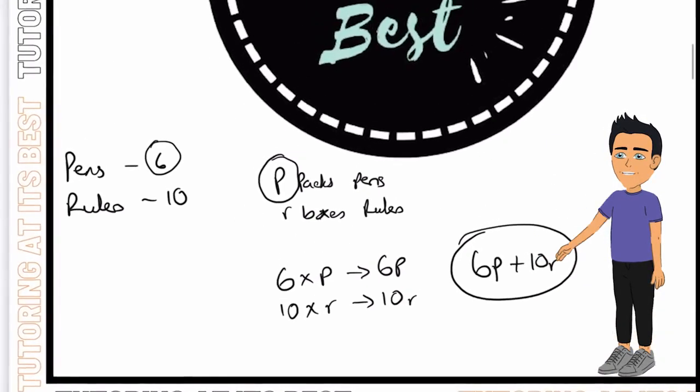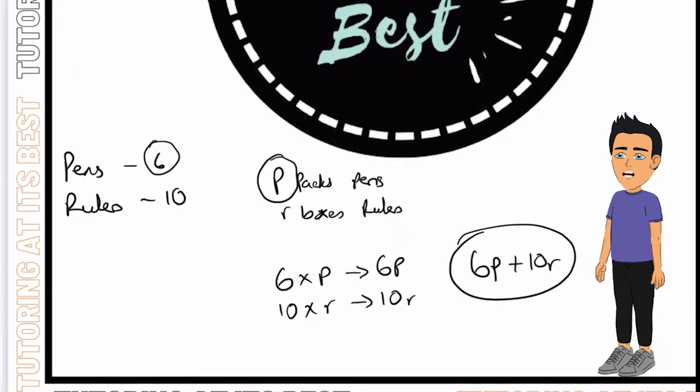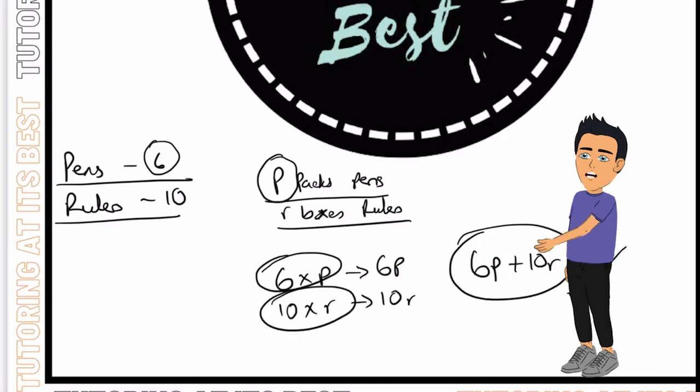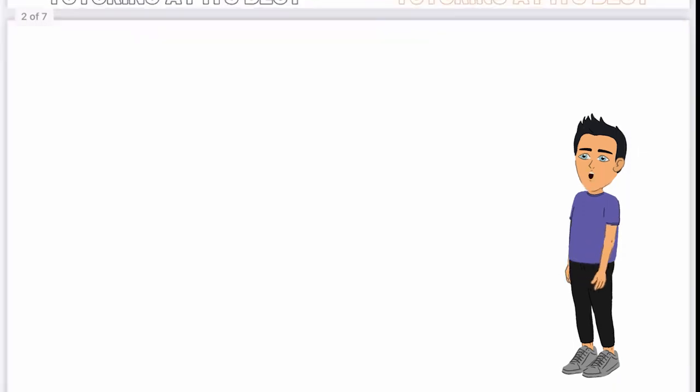Let's go through it once more. Pens are sold in packs of 6 and rulers sold in packs of 10. A teacher buys p-packs of pens and r-boxes of rulers. We need to express the total number bought. There are 6 pens in each pack, so the number of pens is 6 times p. For the rulers, 10 times r. Put that together, we know it's 6p plus 10r. Let's go through one more example.